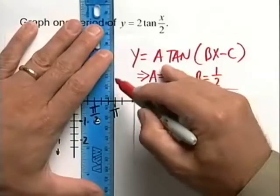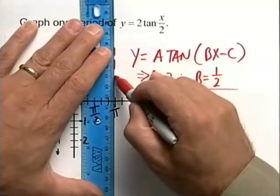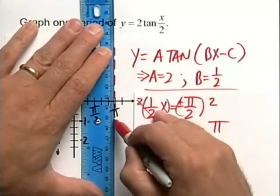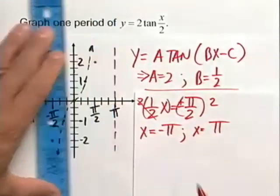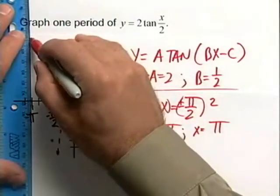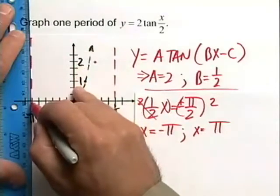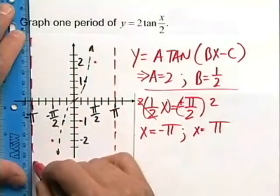So let's go ahead and draw those in here real quick. We want to draw those in. Know that our function 2 times the tangent of x over 2 is not defined at negative pi and positive pi. We want to use this in our graph.